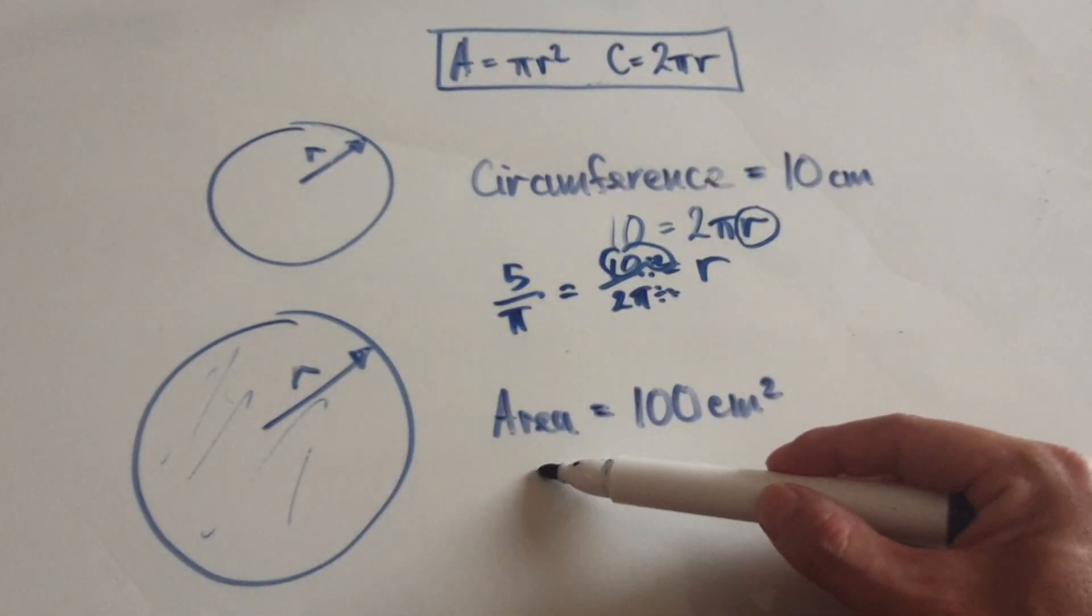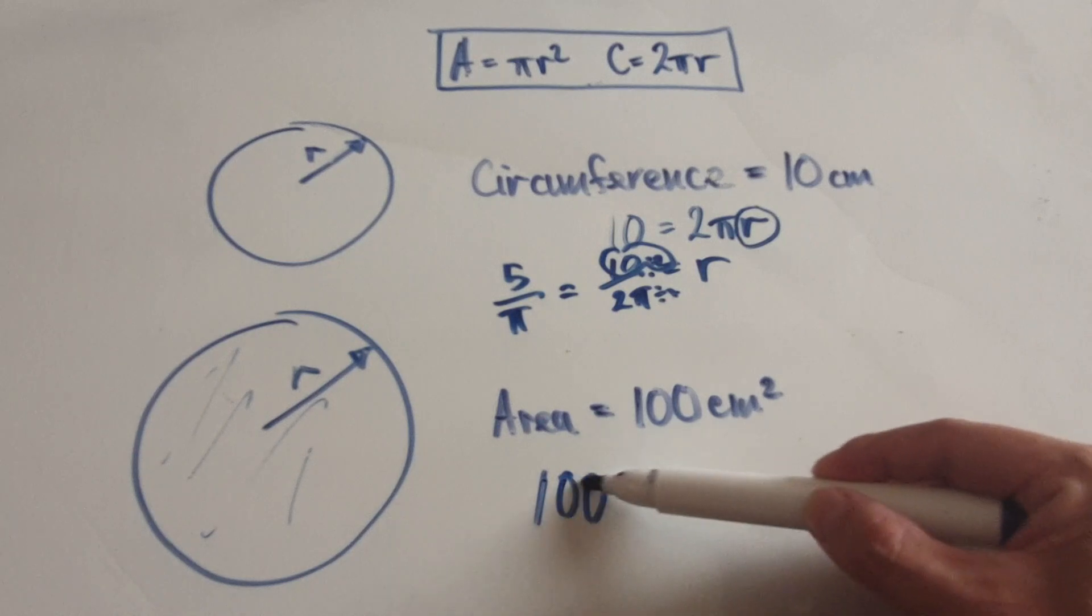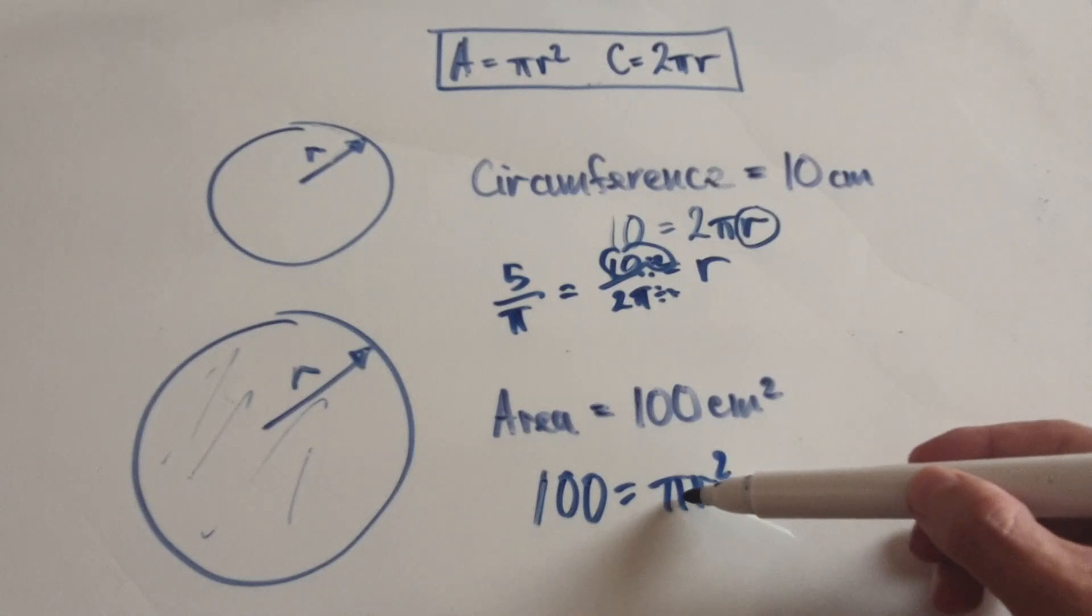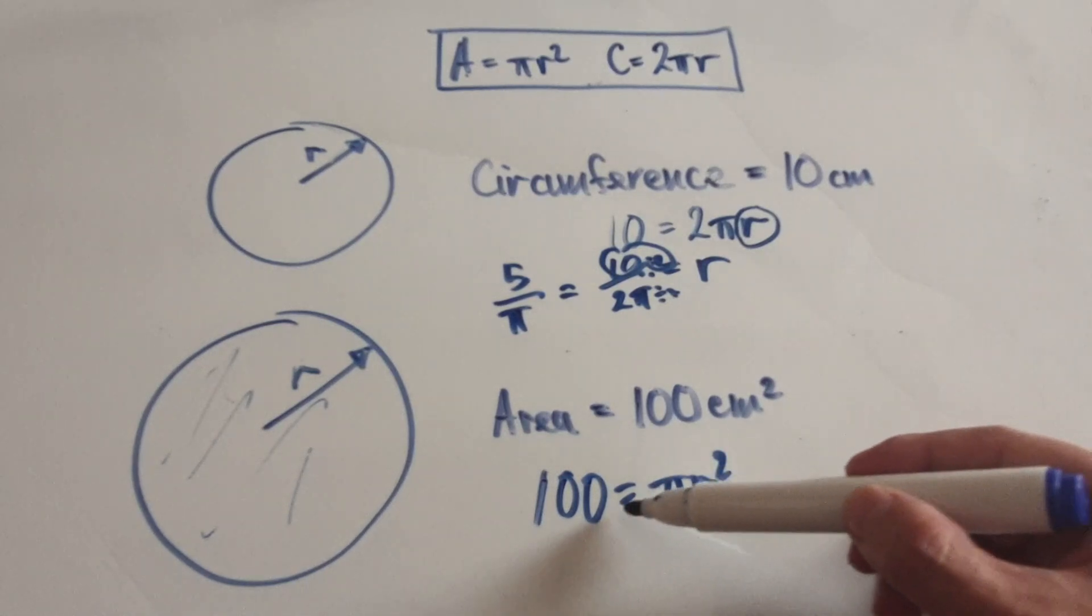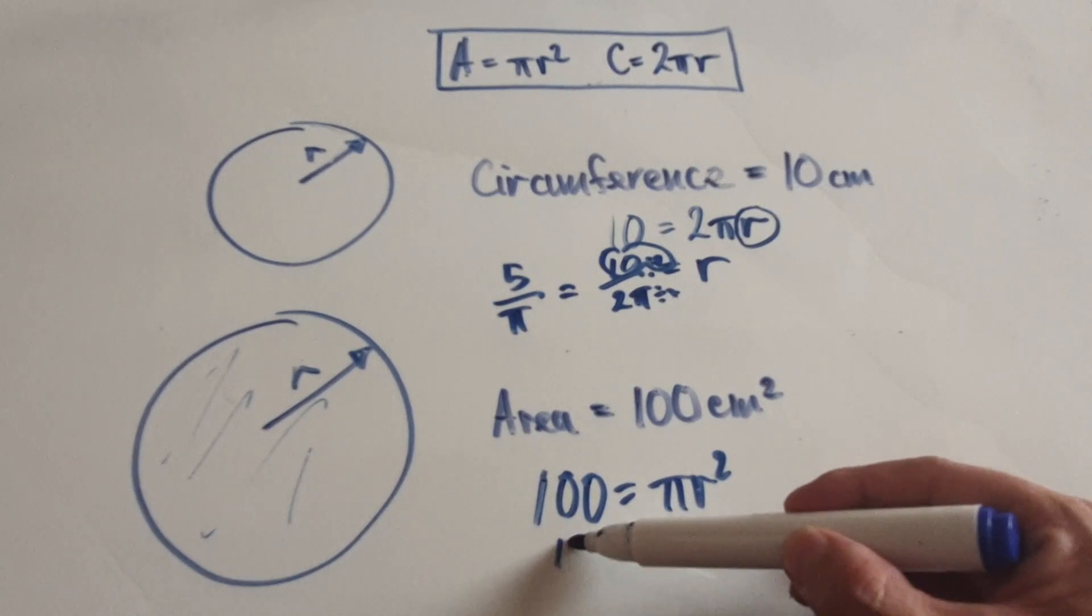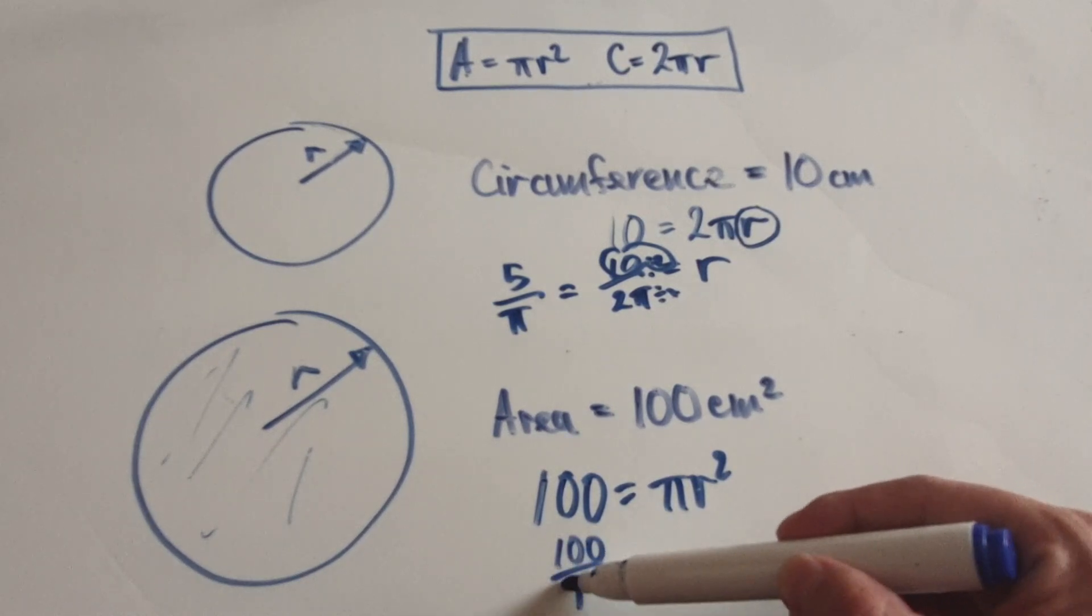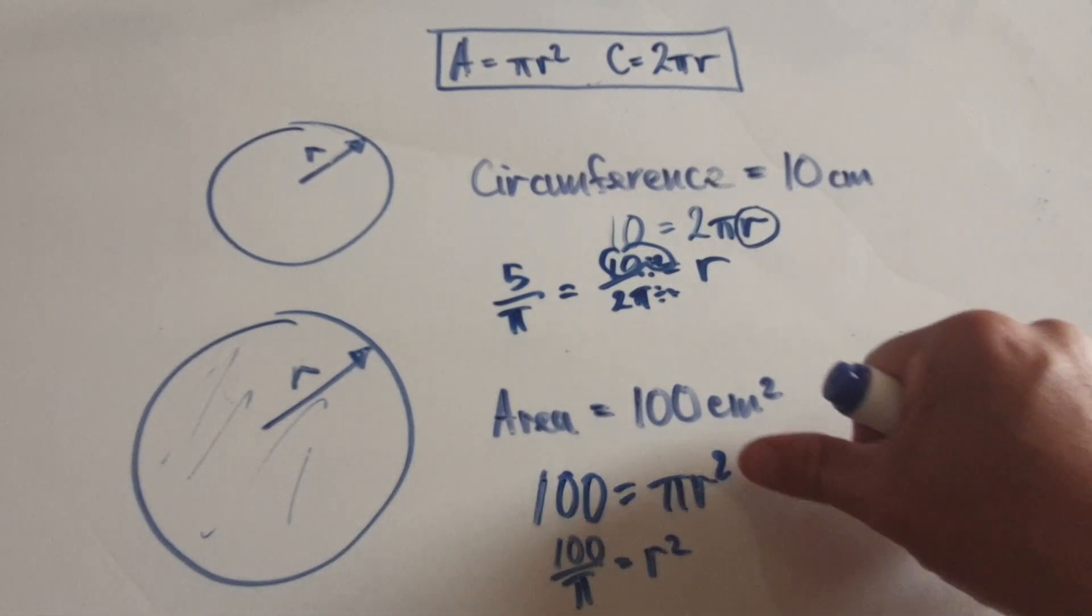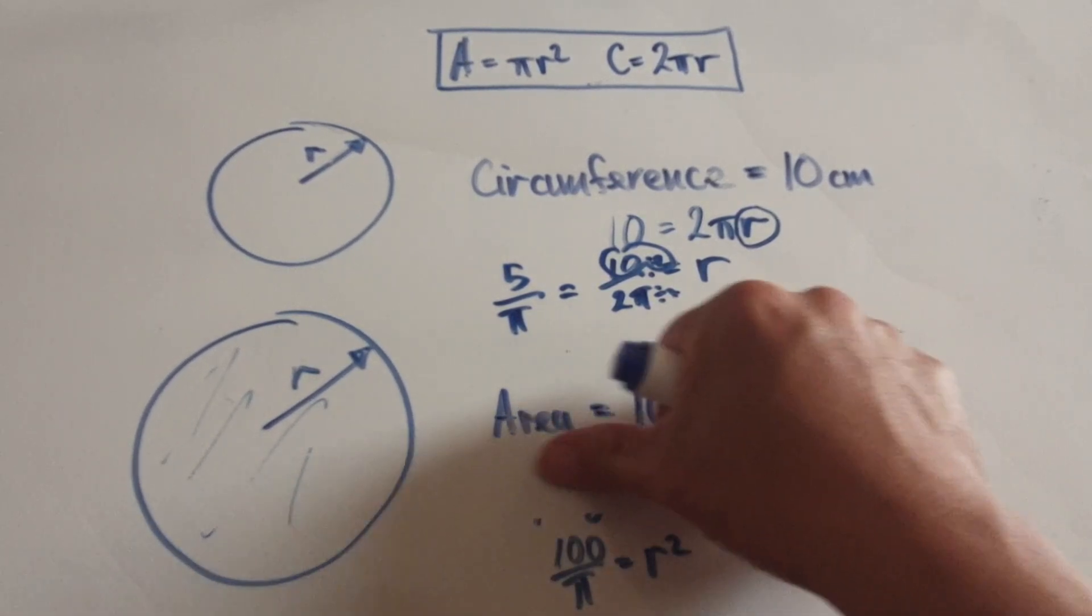Put the 100 into the a, so that would be 100 equals πr squared. Now you want to get r on its own, so divide both sides by π. That would be 100 over π equals r squared.